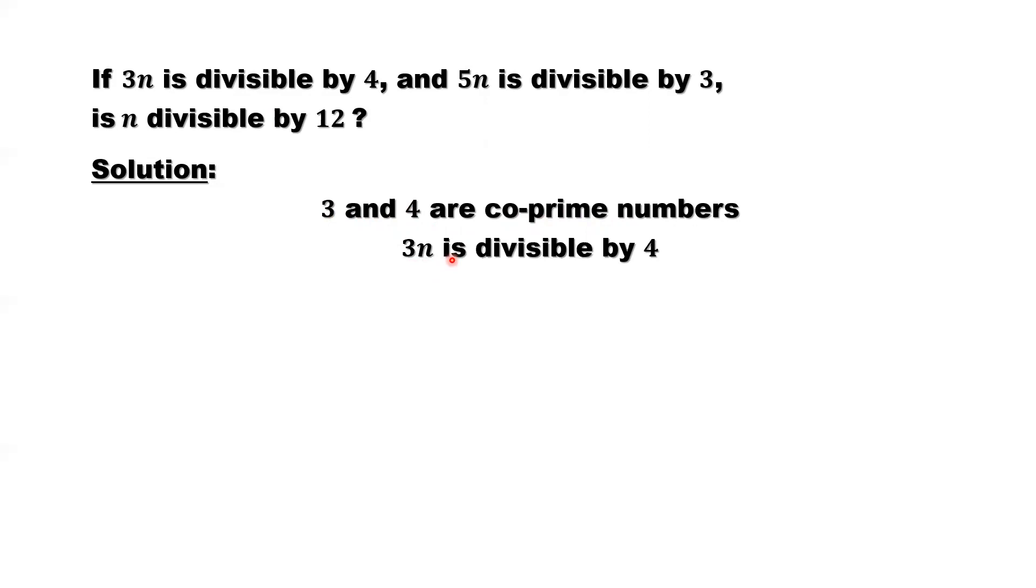3n is divisible by 4 because 3 and 4 have no common factors. So n must be divisible by 4 because 3 and 4 don't have any common factors. So this is a conclusion for this result: n must be divisible by 4.